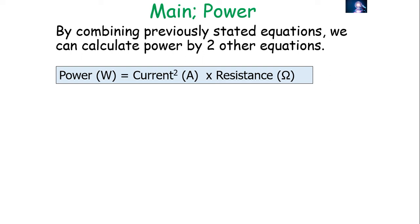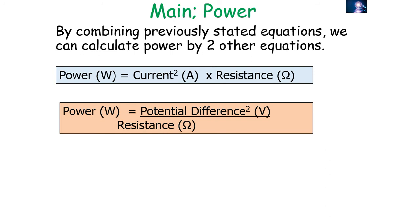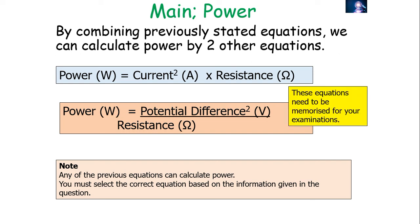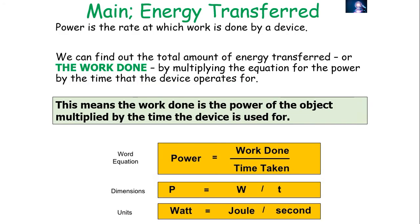So we now have four equations to calculate electrical power: P = I²R, P = V²/R, P = VI, and P = W/t. All of these must be memorised for the exam. The equation you choose depends on the information given in the question. If you're given current and resistance, use P = I²R. If given work done and time, use P = W/t. If given potential difference and current, use P = VI.